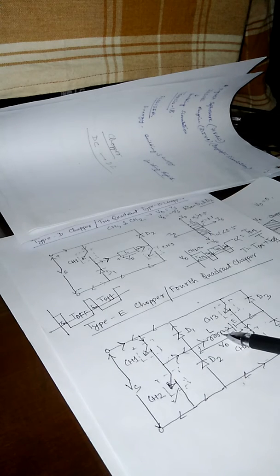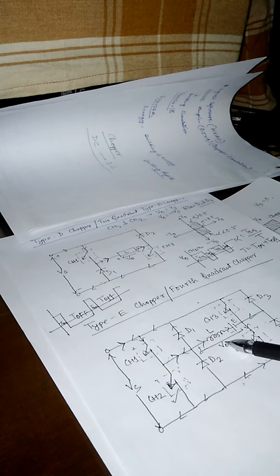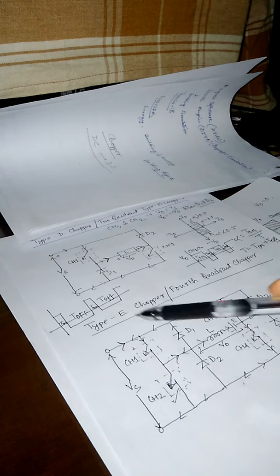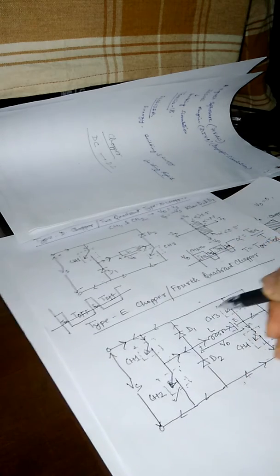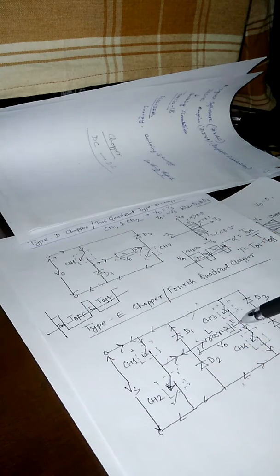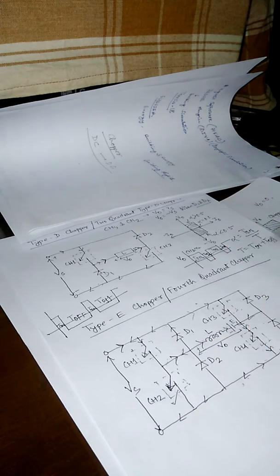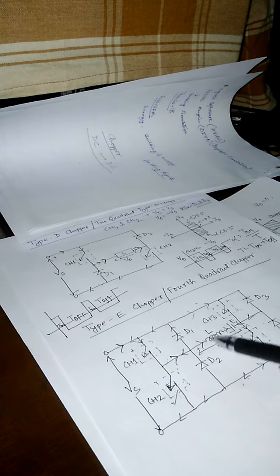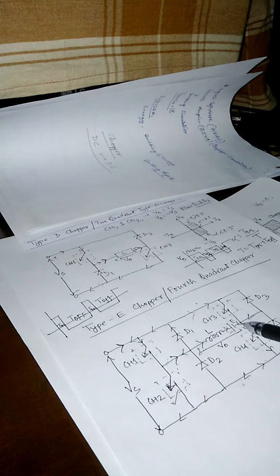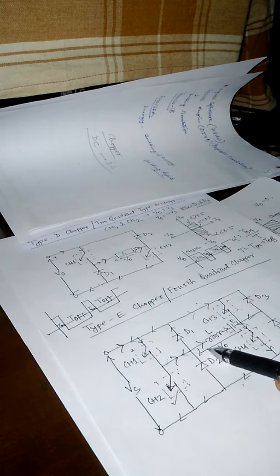The source voltage is going to feed the load, but the polarity of the load EMF is going to be reversed, because the current is going from this side. So, the polarity of load EMF is obviously going to reverse and the current polarity is also treated as negative.